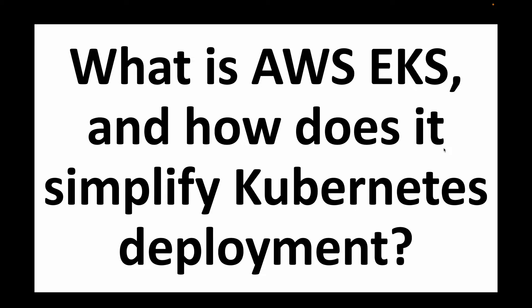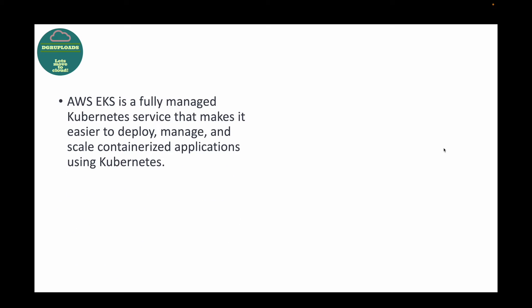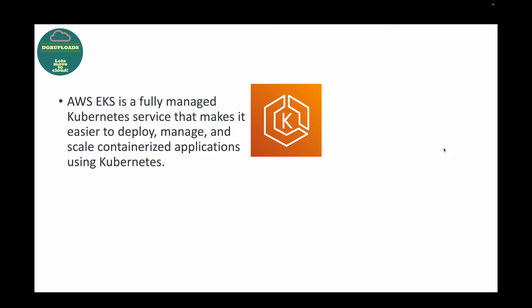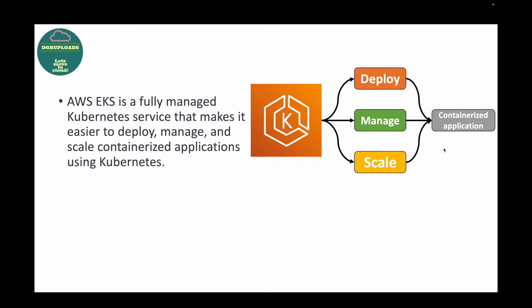EKS is a fully managed Kubernetes service provided by AWS. This service mainly helps us to deploy, manage, and scale containerized applications using Kubernetes. If you want to work with Kubernetes on AWS, you can make use of the EKS service. Since it is fully managed by AWS, you don't have to worry about the underlying infrastructure or manually setting up the infrastructure — AWS takes care of that for you.